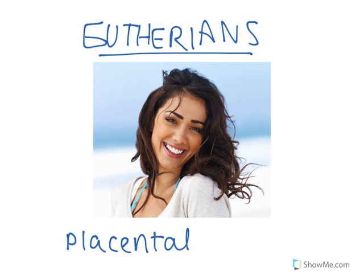So those are the three main different categories of mammals. Again, those are monotremes which are egg-laying mammals, marsupials which are mammals with a pouch, and eutherians which are mammals that primarily have their young grow up via placental nutrients and growth. And that's basically all we have for mammal classification by how they give birth.